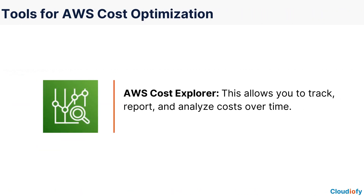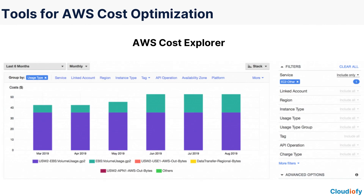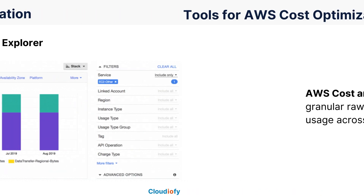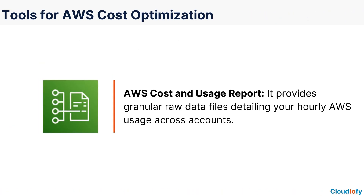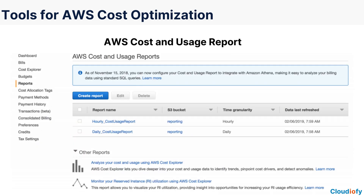AWS Cost Explorer allows you to track, report, and analyze costs over time, giving you a comprehensive view of your AWS spending patterns. The AWS Cost and Usage Report provides granular raw data files detailing your hourly AWS usage across accounts, and is invaluable in identifying areas of high spending and optimizing your AWS costs.